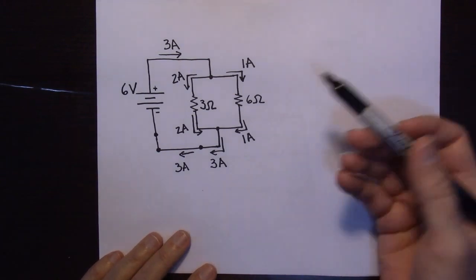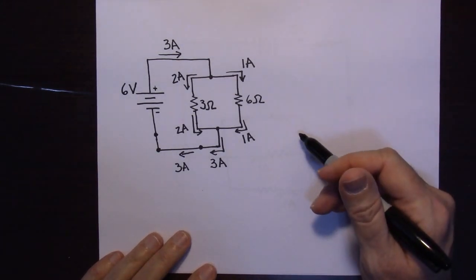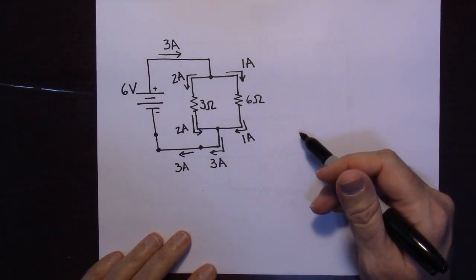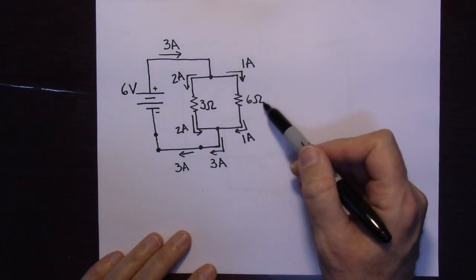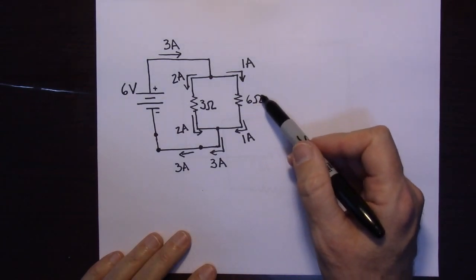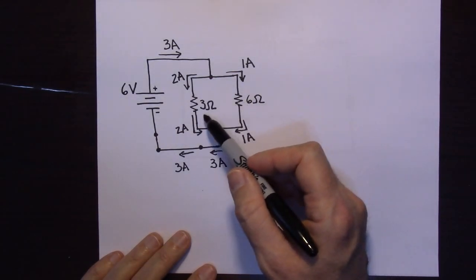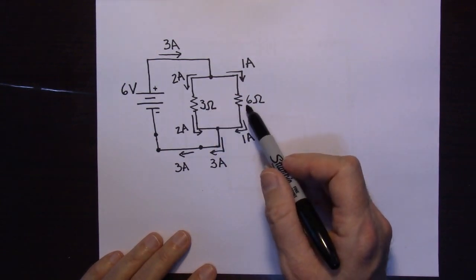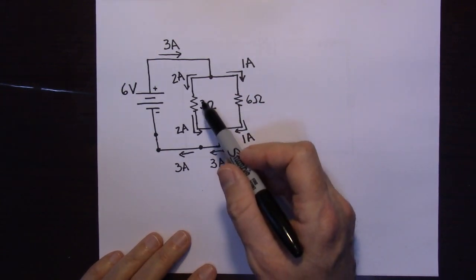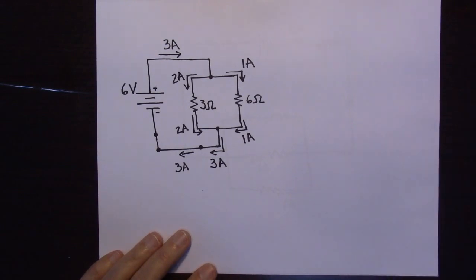Notice something interesting: the six-ohm resistor is getting only one amp, whereas the three-ohm resistor offers half the resistance, and so it gets two amps.